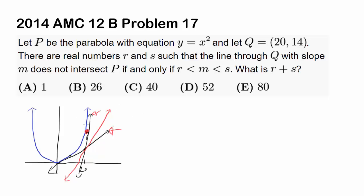So we want to find the slope of the tangent lines, because they are going to be R and S, the slope of the tangent line that goes through the point (20, 14), touching the parabola. There's going to be two lines, one with slope R and one with slope S. And those are what we want to find, and we want to find eventually R plus S. So let's do it.